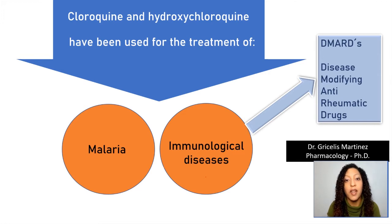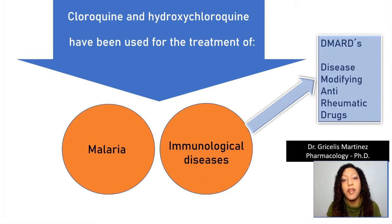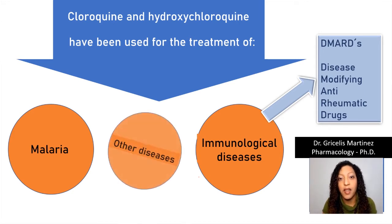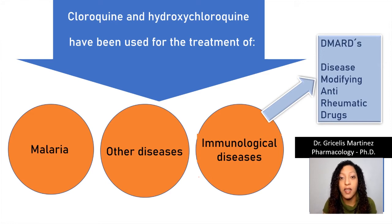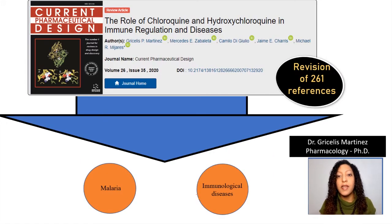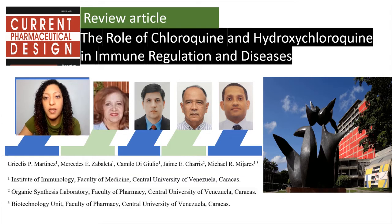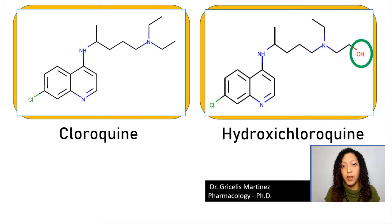Chloroquine and hydroxychloroquine have been used for the treatment of malaria and for the treatment of immunological diseases, being known as disease-modifying anti-rheumatic drugs. Nowadays, the potential use of these compounds is growing every day. Therefore, we highlighted all these in our review article, recently titled 'The Role of Chloroquine and Hydroxychloroquine in Immune Regulation and Diseases.' This review was made possible with the joint effort of researchers from the Central University of Venezuela.